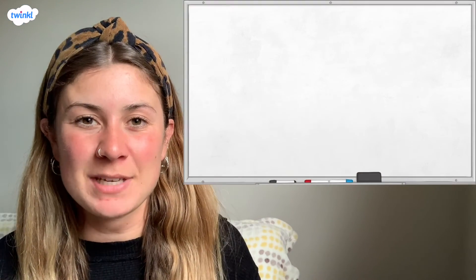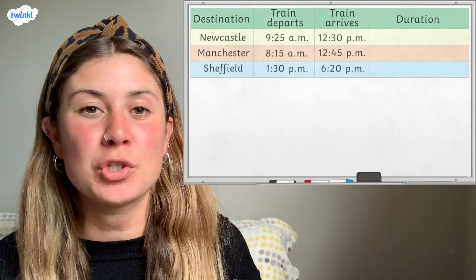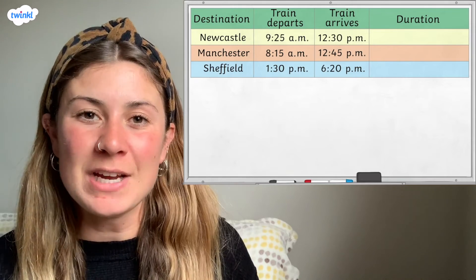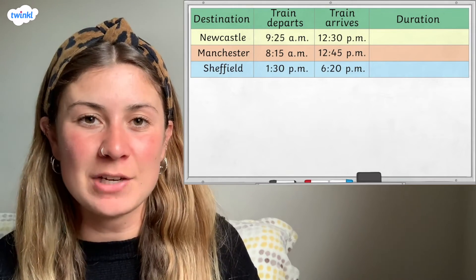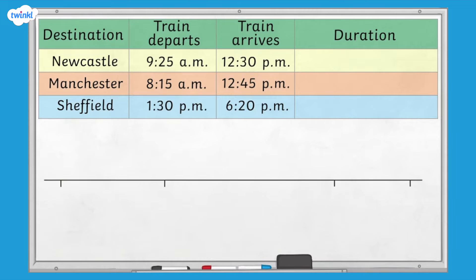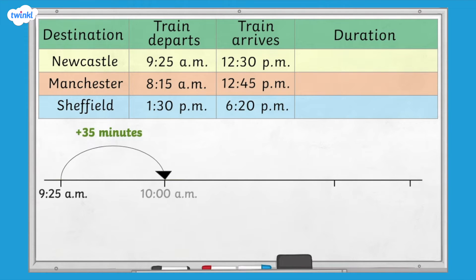Here, we have a timetable that shows train times in England. We are going to work out the duration of the train journey to Newcastle. We can use a number line to help calculate the duration of the journey. We start at 9.25am and can jump 35 minutes to get to 10am. We can then jump 2 more hours to 12pm.